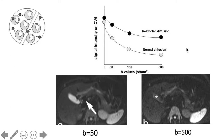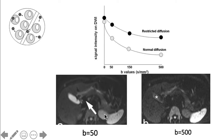This is another image with a B value of 50. Low B values are said to be sensitive to fast motion of water molecules. The portal vein is dark, and this is what we call the black blood image.